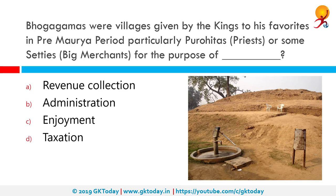Bhogagamas were religious gifts given by the king to his favorites in the pre-Maurya period, including purohitas or some cities, for the purpose of what? The correct answer is enjoyment. For example, Pava — now Fazilnagar — was a city in ancient India at the time of Gautama Buddha, visited by the Buddha during his last journey, going there from Bhogagama and staying in Kunda's mango grove.